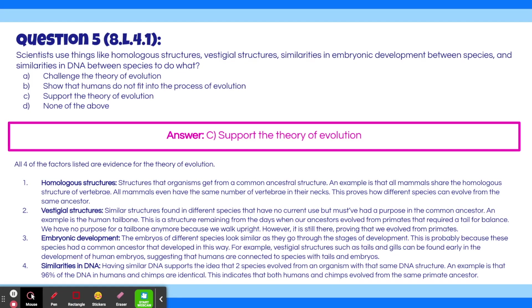The third evidence was embryonic development. The embryos of different species look similar as they go through the stages of development, probably because these species had a common ancestor that developed in this way. For example, vestigial structures such as tails and gills can be found early in the development of human embryos, suggesting that humans are connected to species with tails and gills. The last evidence is similarities in DNA. Having similar DNA supports the idea that two species evolved from an organism with that same DNA structure. An example is that 96% of DNA in humans and chimps is identical, indicating they evolved from the same primate ancestor.